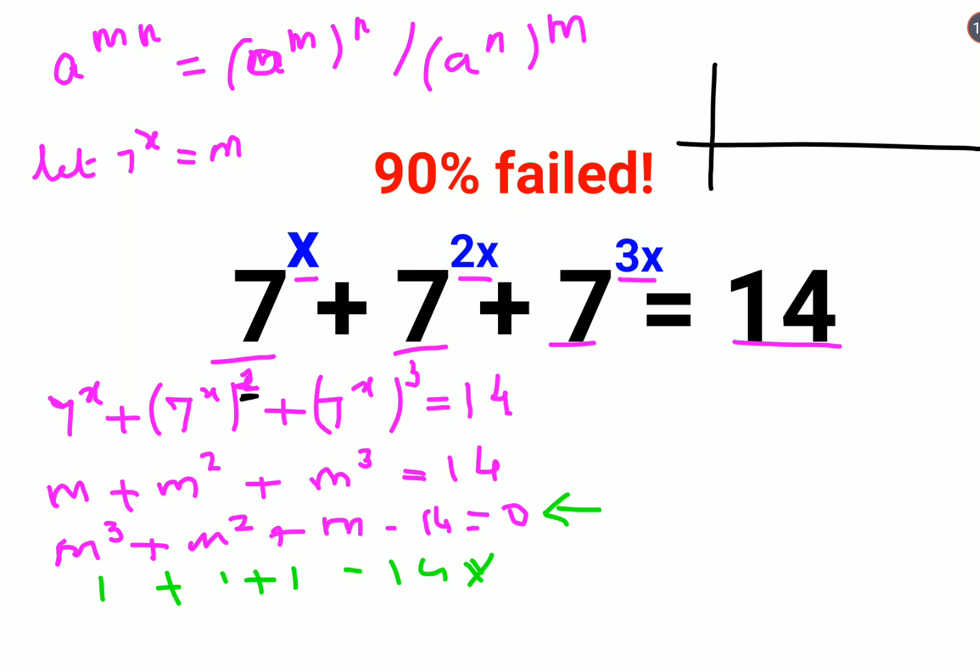What about we take the value of m as 2. So you get 8 plus 4 because 2 cube is 8, 2 square is 4, plus 2 minus 14 and that gets you a 0. So we can say that the factor or rather the value of m equals to 2 is absolutely correct for this particular equation.